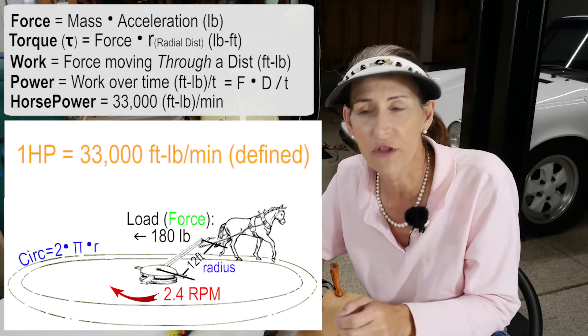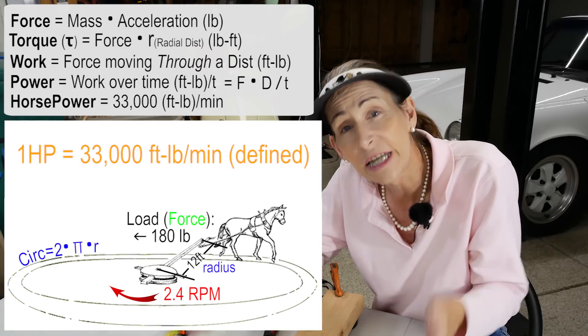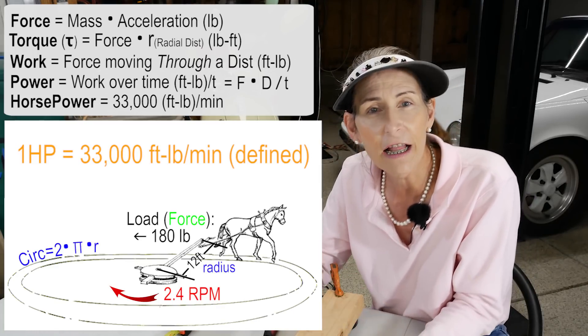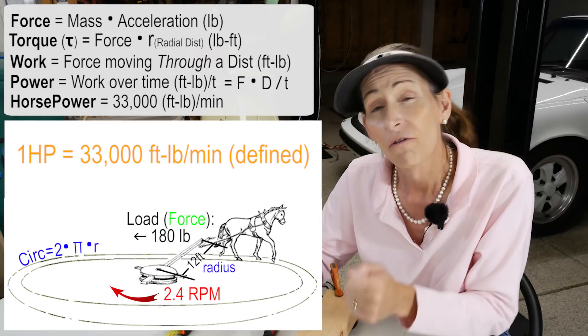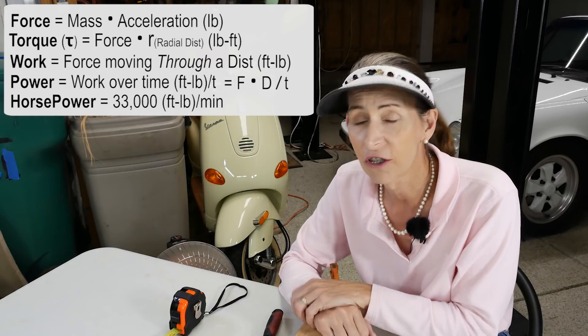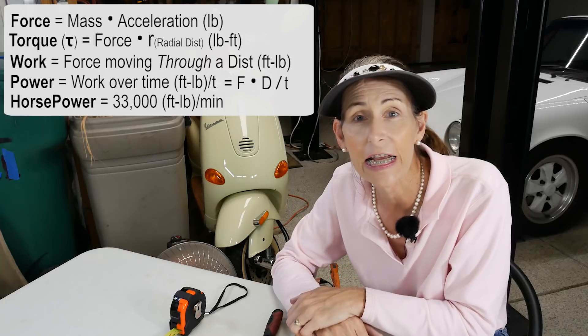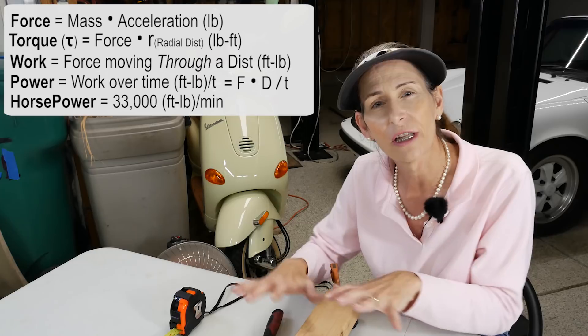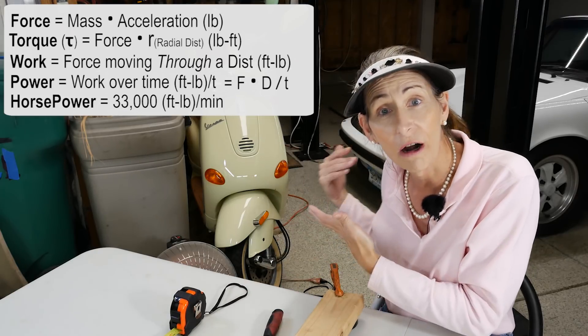So James knew that if he could say, well my steam engine puts out X horsepower, then that was a scaling factor that the farmer understood. So that's really all it is. So let's go into the derivation of how you actually calculate horsepower for a car.